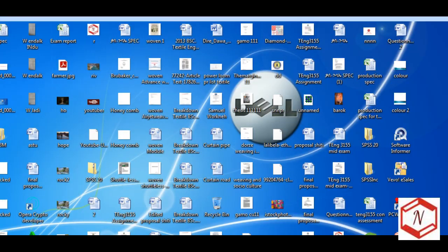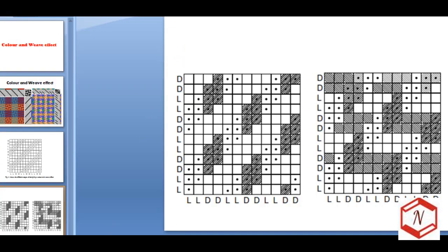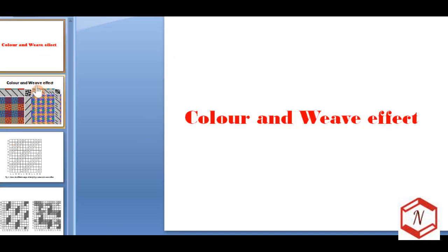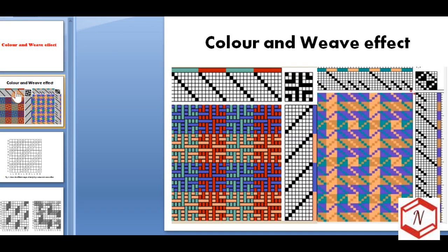Hello and welcome to this video. The goal of this video is how to produce the color-and-weave effect by using viewpoint software. When a fabric is woven with two or more colors in a particular pattern, a color-and-weave effect is produced. Color-and-weave effects enable the designer to observe the effect that a color plan will produce for a given weave.